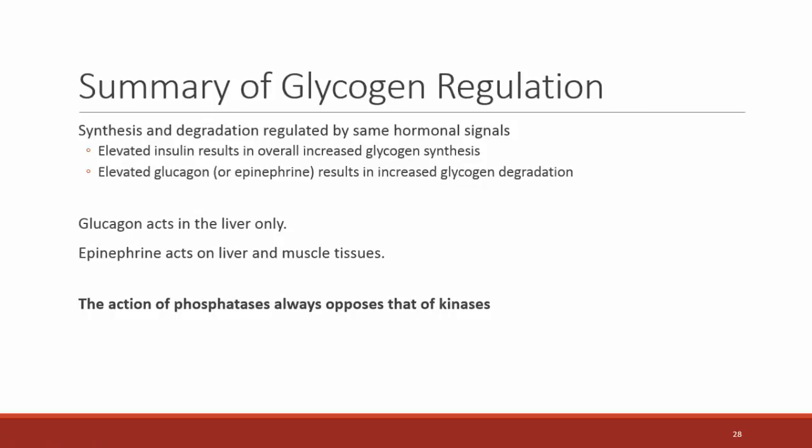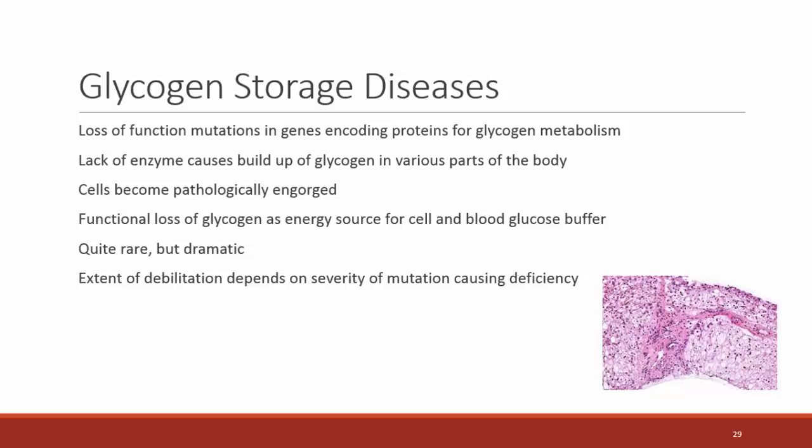Summary of glycogen regulation: the synthesis and degradation of glycogen are regulated by the same hormonal signals, but these signals have wide-ranging actions by activating or deactivating different kinases. Generally speaking, elevated insulin leads to glycogen synthesis — we have a lot of glucose and want to store it. Elevated glucagon or epinephrine results in increased glycogen degradation — we need glucose and are going to free it from glycogen. Glucagon acts in the liver; epinephrine acts in both the liver and muscles, especially muscles. As a key concept throughout this course: the action of phosphatases always opposes that of kinases.